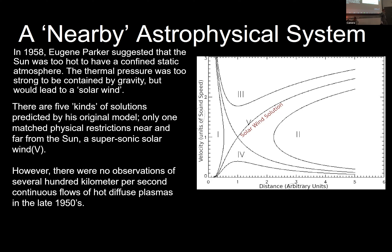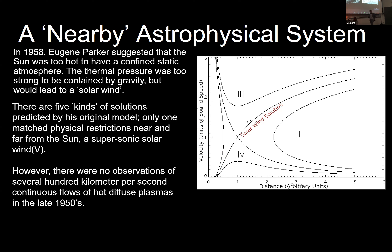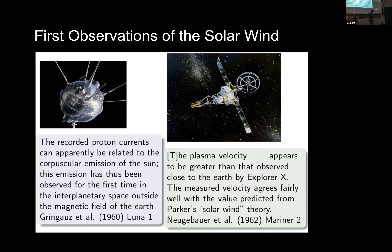Parker basically showed that the sun is sufficiently hot that the thermal pressure pushing the sun's atmosphere away is too strong to be completely constrained by gravitational pull. Rather than a static atmosphere, you get something expanding outward, filling up the entire solar system — the bubble we refer to as our heliosphere. He solved a set of differential equations giving us this physical solution. The x-axis is distance from the sun's surface; the y-axis is how fast the solar wind is blowing, showing acceleration from rest to supersonic velocities.